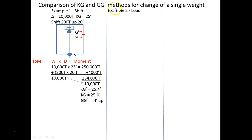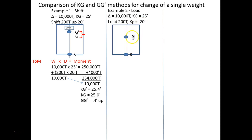Let's do another example. In this one we're going to load. So it's 10,000 tons, KG 25 — everything the same, except now we're going to load 200 tons at a KG of 20 feet. What does that picture look like? We come in like this, then suddenly we put 200 tons below our current G. What's G going to do? It's going to move towards the weight, and the center of gravity will decrease. So G is going to move to a new G-prime, and we should expect it to be less than 25 feet.